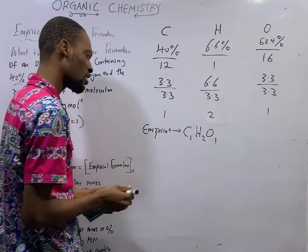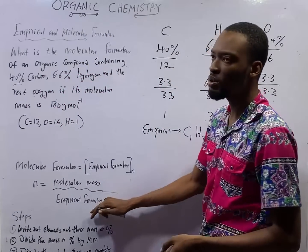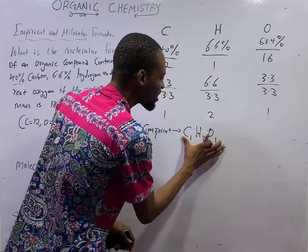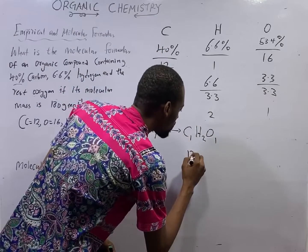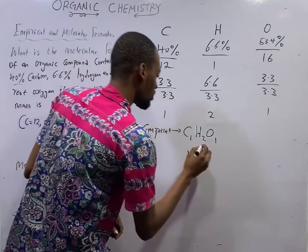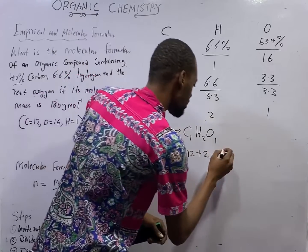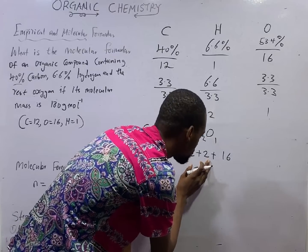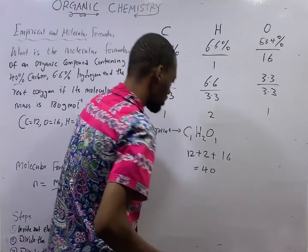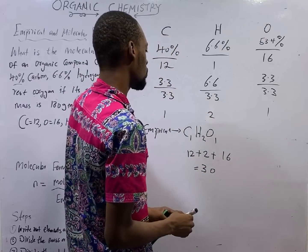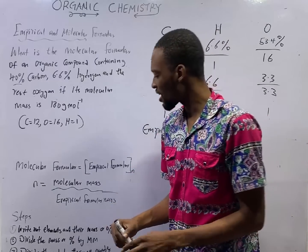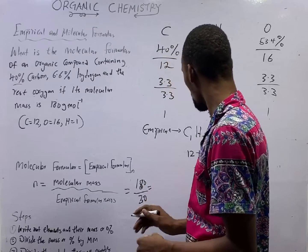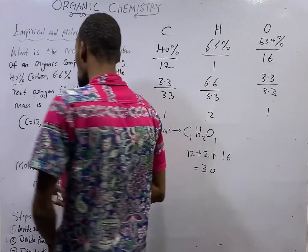We are not asked for the empirical formula directly, but we need it to get the empirical formula mass. The empirical formula mass of CH2O is: 1 × 12 (carbon) + 2 × 1 (hydrogen) + 1 × 16 (oxygen) = 12 + 2 + 16 = 30. So the empirical formula mass is 30. Therefore N = 180 ÷ 30 = 6.